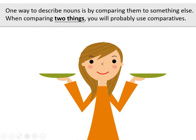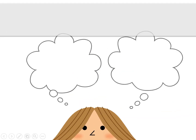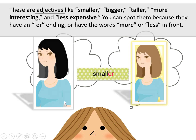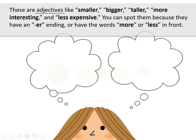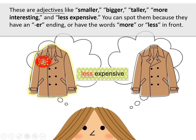One way to describe nouns is by comparing them to something else. When comparing two things, you will probably use comparatives. These are adjectives like smaller, bigger, taller, more interesting, and less expensive. You can spot them because they have an ER ending or have the words more or less in front.